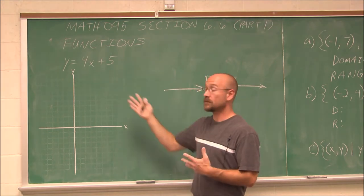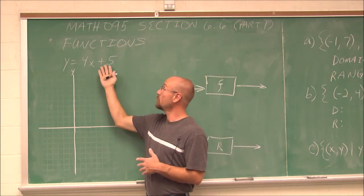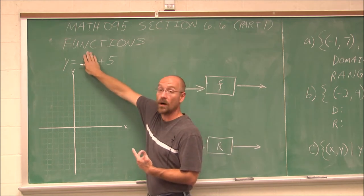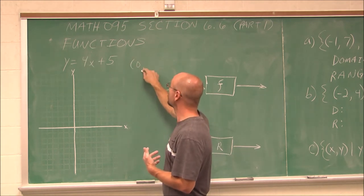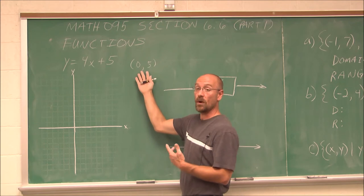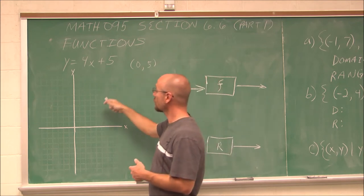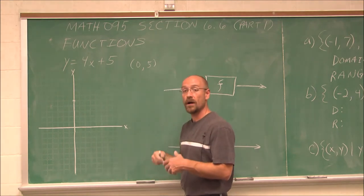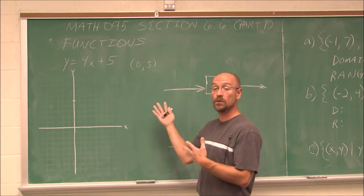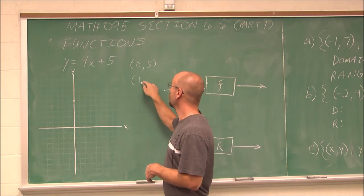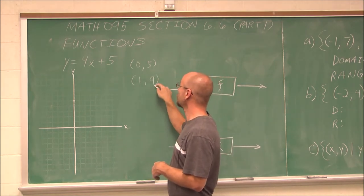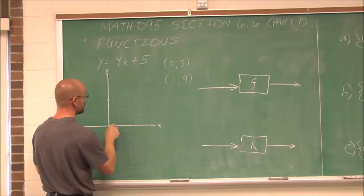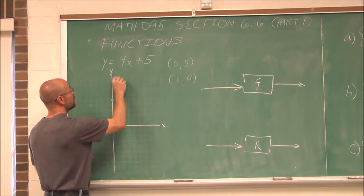So if we were to graph this, since it's in slope-intercept form, we know at least one point, and that's the intercept. When x is 0, y is 5. So I'm going to write (0, 5). This is the y-intercept. So I can go ahead and plot that point (0, 5). If we want another point — because we need at least two to graph any line — maybe I say if x is 1, and I plug that in, I get 9. So (1, 9) would be another value on here. At x equals 1, we'd have the value 9.